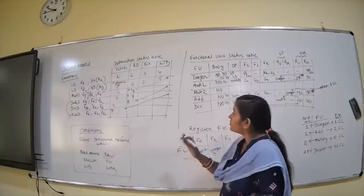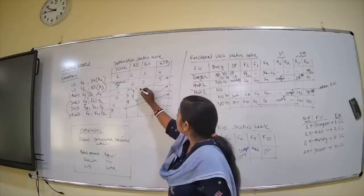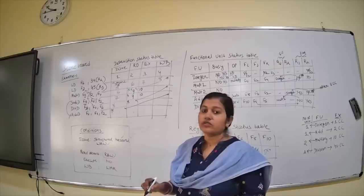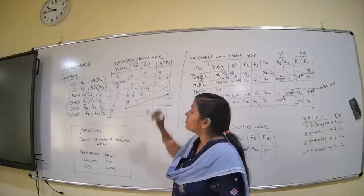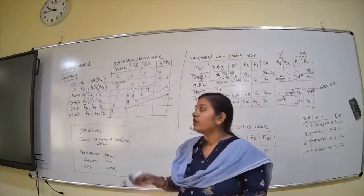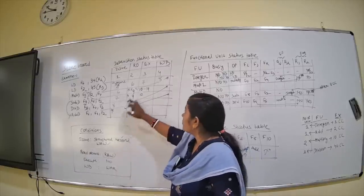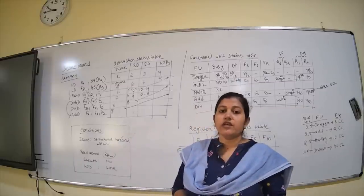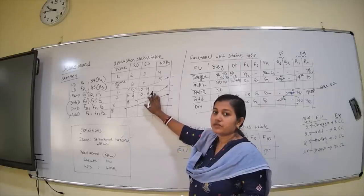At the ninth clock cycle the multiply and subtract instructions proceed to read operands and then at the tenth clock cycle they enter the execute stage. Multiply takes ten clock cycles so it executes from cycle 10 to cycle 19. Subtract takes two clock cycles so it executes at cycles 10 and 11, completing at the end of cycle 11.